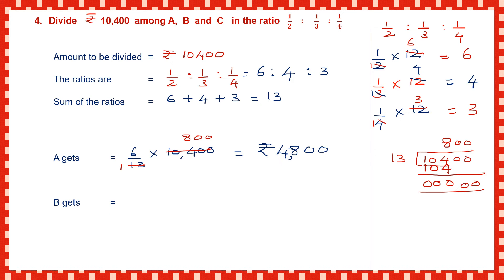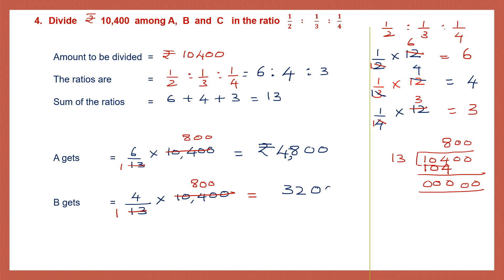B gets 4 — the second term — by 13 into 10,400. Since we've already divided 10,400 by 13, cancel straight away: 13 into 800. Multiply 4 into 800 — 4 eights are 32, add two zeros — this is 3,200. B gets 3,200 rupees.